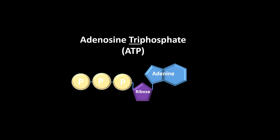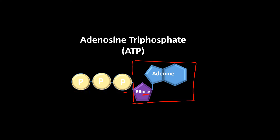Let's take a look at the structure. We have this molecule called adenine bonded to a ribose, and that makes adenosine. Ribose is a sugar. Now that adenosine is bonded to three phosphates — one, two, and three. That's where the name comes from: triphosphate. So we have adenosine and then triphosphate, because there are three different phosphates bonded there.